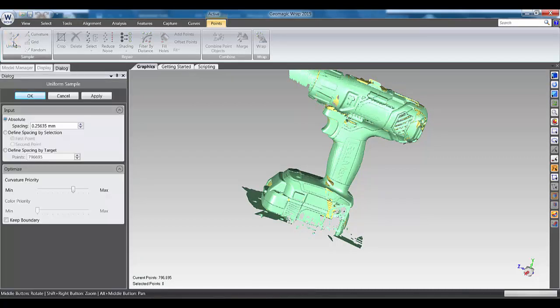And probably the next process I would go through is to run a uniform filter across the data. So here we're looking for a certain spacing, and we're trying to maintain points over curvatures to give us a smooth mesh. So if I just click apply to that and let it do its thing, we've reduced the number of points in here.